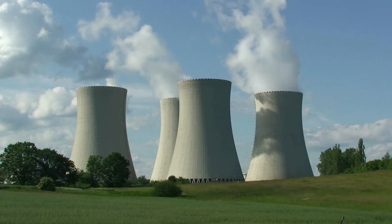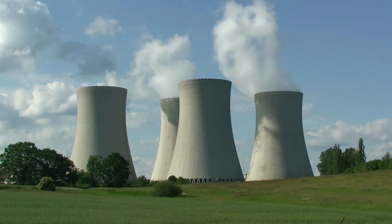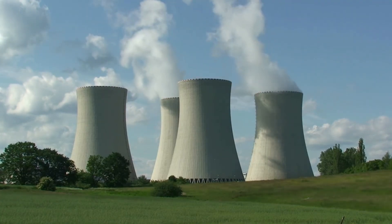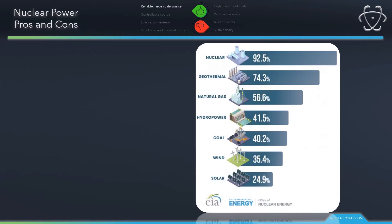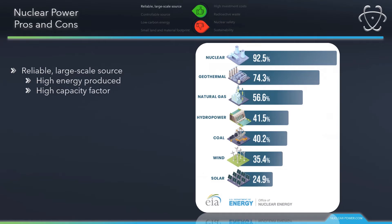Now we will discuss the most mentioned advantages. Nuclear power is a reliable, large-scale, controllable, low-carbon energy source with a small land footprint. The term reliable means that nuclear energy has by far the highest capacity factor of any other energy source. According to the US DOE, nuclear power plants are producing maximum power more than 92% of the time during the year — nearly two times more than natural gas and coal units, and almost three times more reliable than wind and solar plants. Nuclear power plants are considered baseload sources of electricity, designed to operate at close to maximum output continuously, apart from maintenance refueling outages typically every one and a half to two years.